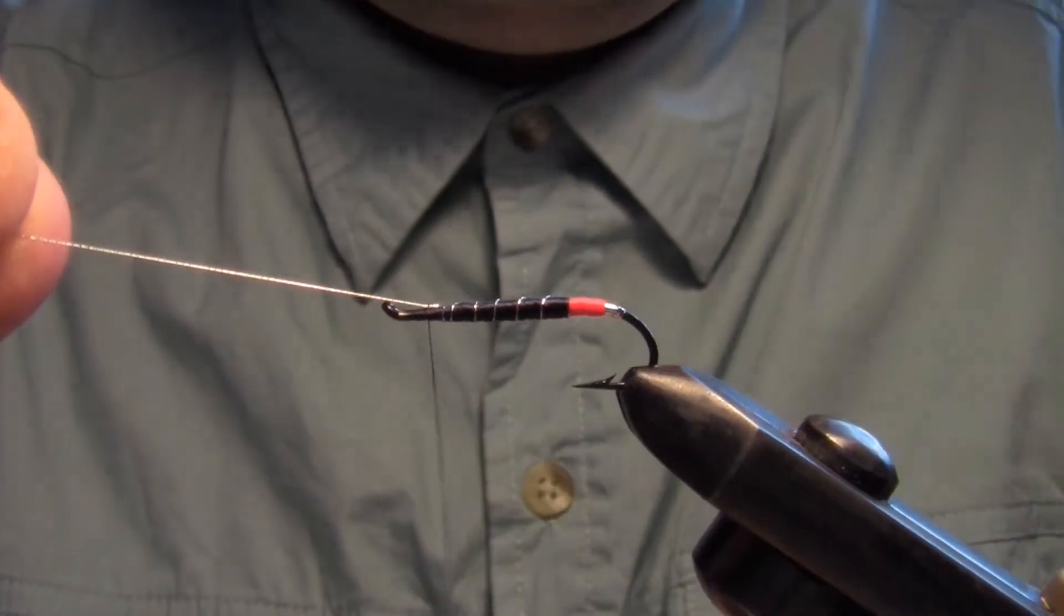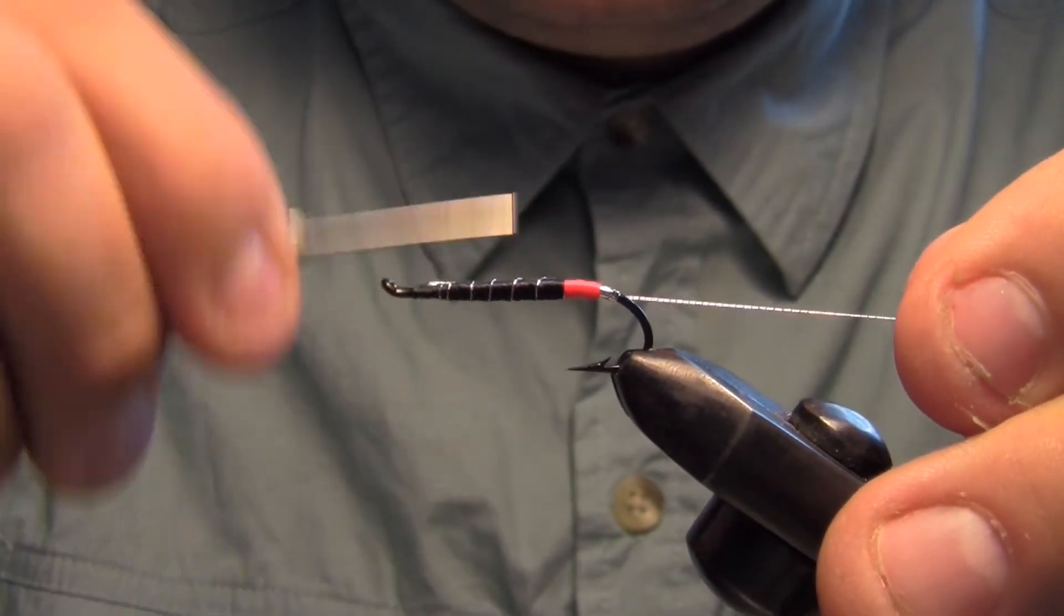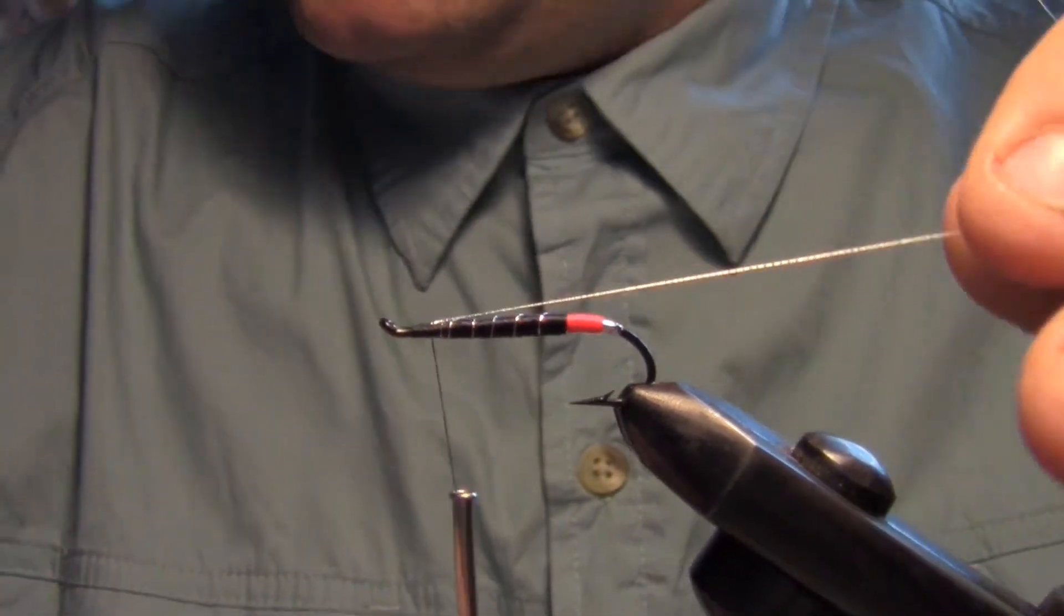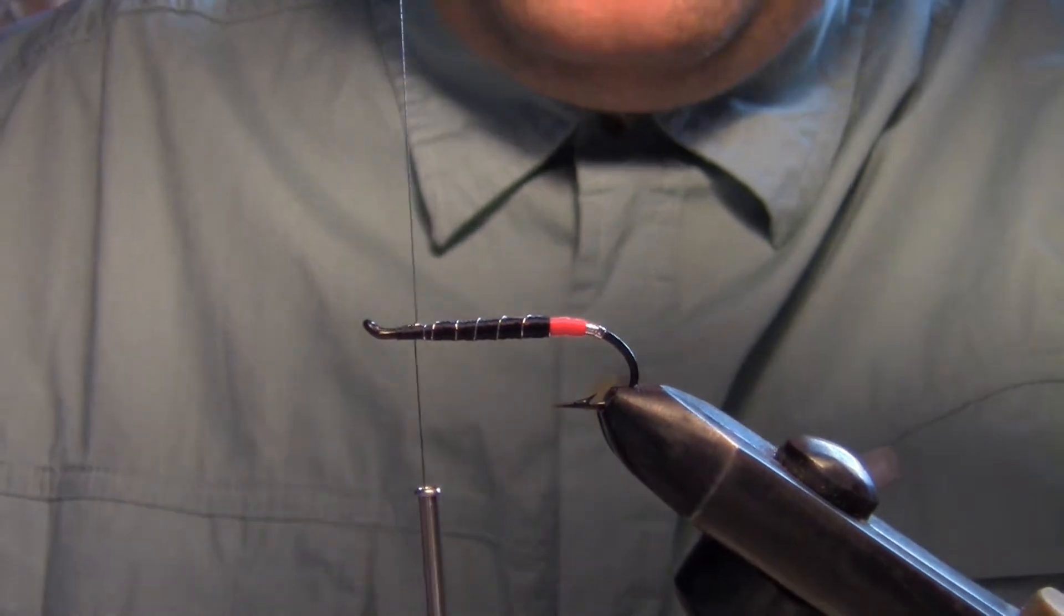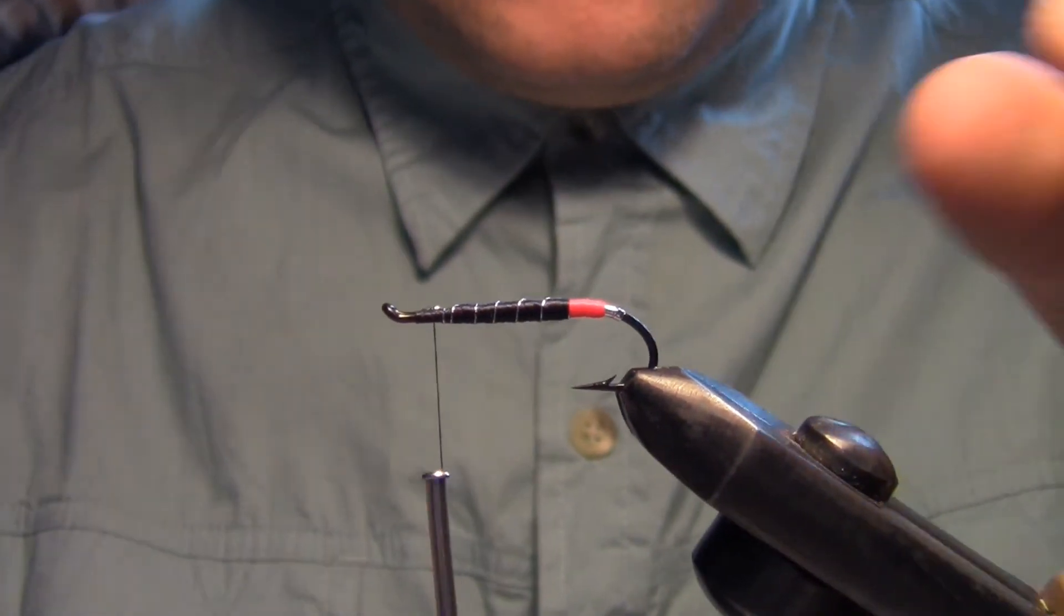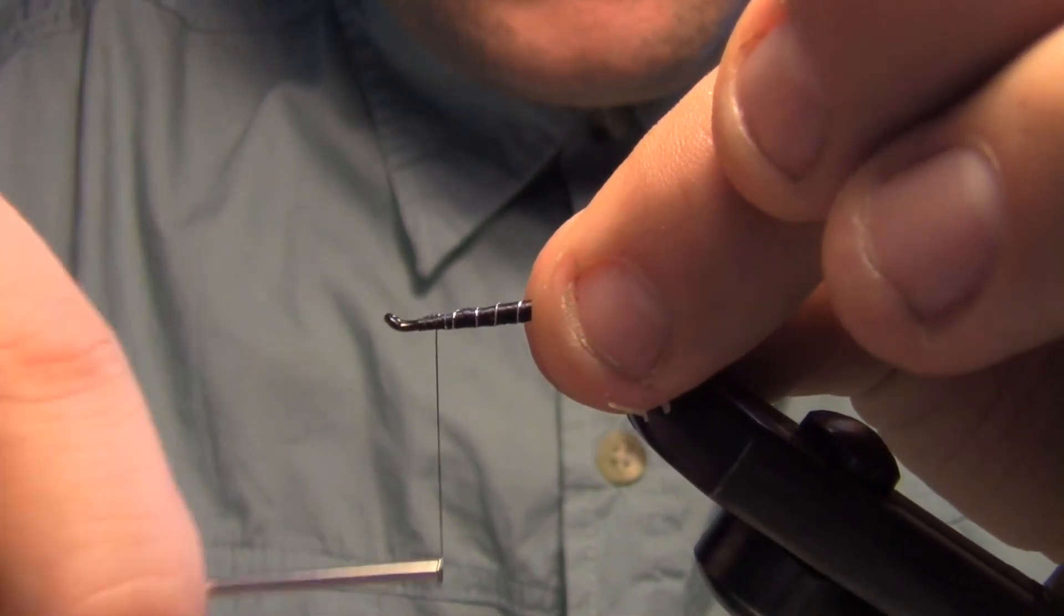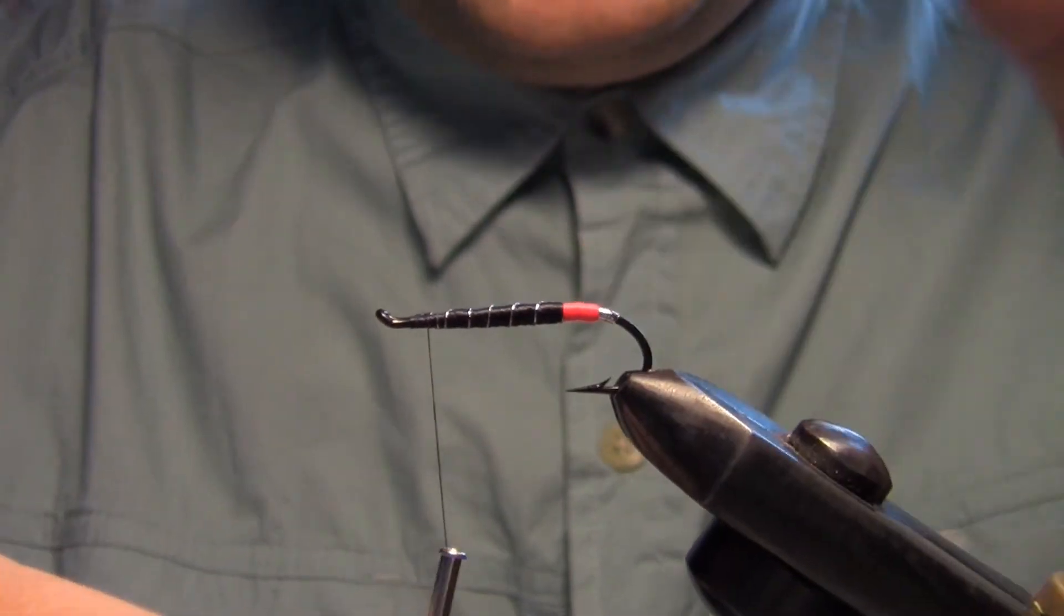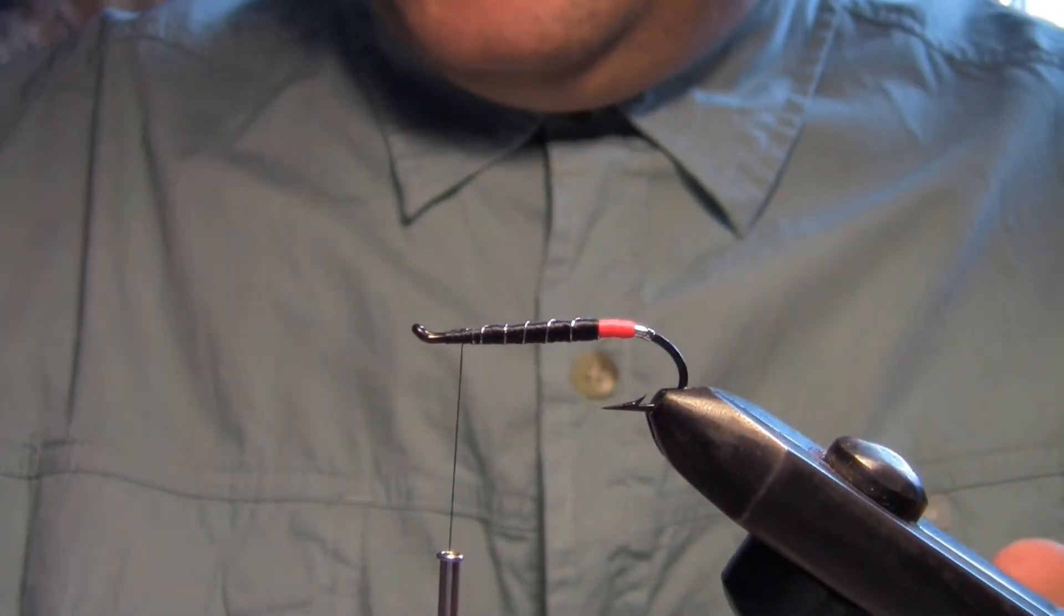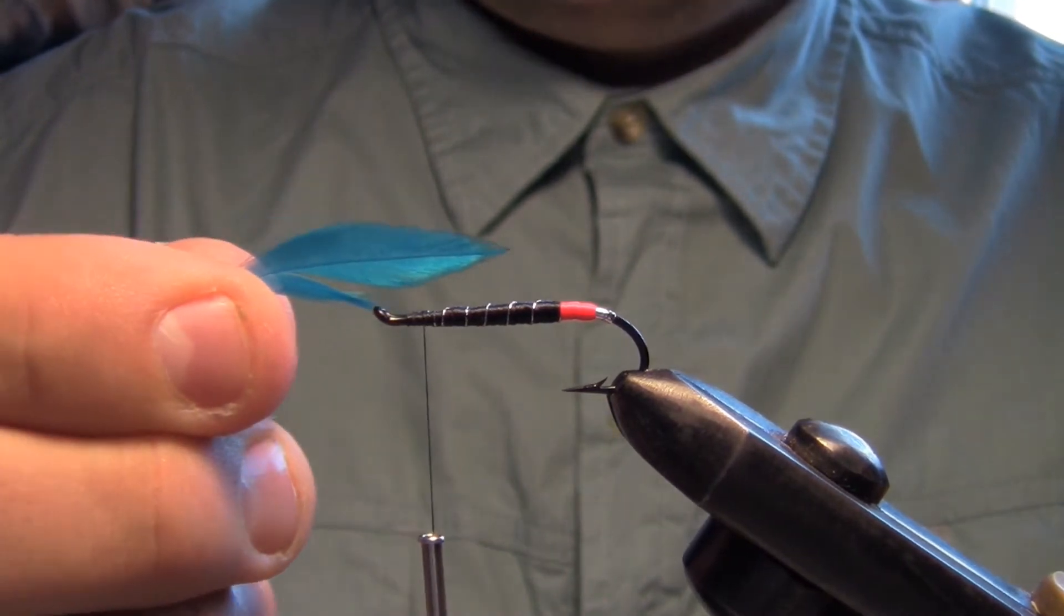There we go. And fold it back. Okay, cut that off. Now we're going to tie in the blue, and the Blue Charm is going to be a throat right there, that's the throat material.